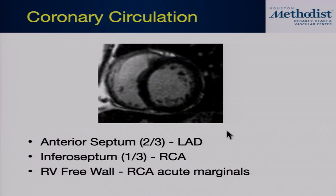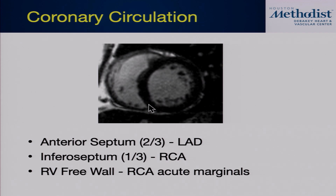Regarding the blood supply for the right ventricle: the interventricular septum is supplied by both the LAD and RCA, with about the anterior two-thirds supplied by the LAD and the inferior one-third by the RCA. The RV free wall is generally supplied by acute marginal branches.